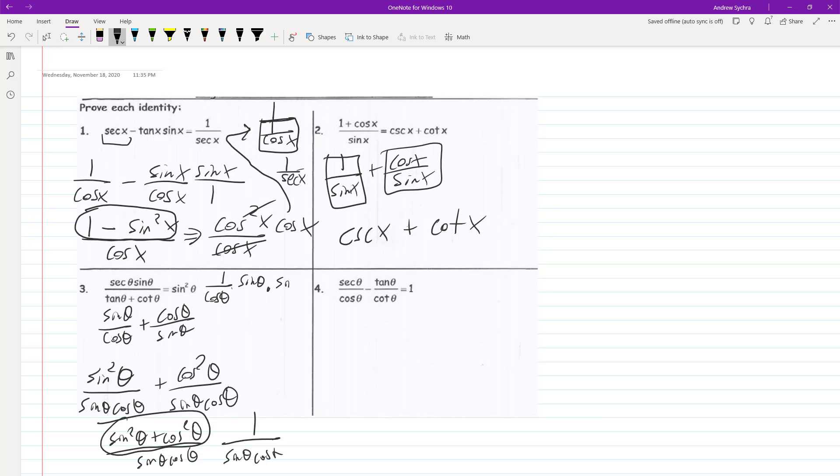So it's going to be 1 over cosine of theta times sine of theta. Because reciprocated, it's going to be sine theta, cosine theta. Cosine thetas cancel out, and we're left with sine squared theta. And that's the answer for that one.